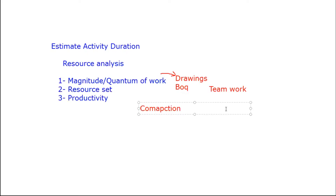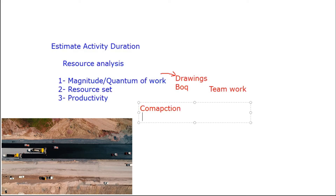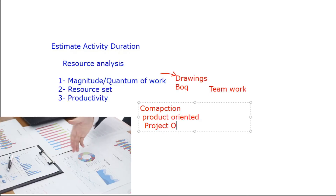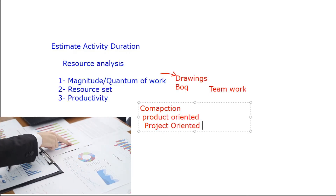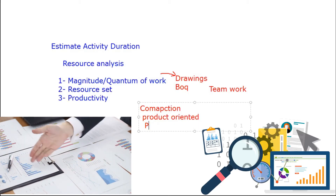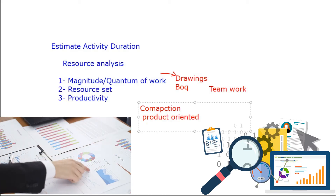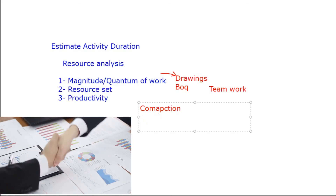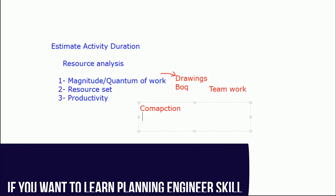You have to know what your activity is. Let's say compaction - natural ground compaction. You need two types of knowledge: product-oriented and project-oriented. Product-oriented means the technical knowledge about the work itself, like road compaction knowledge. Project-oriented means your project management and planning knowledge. As a planning engineer, you concentrate on project-oriented knowledge, while for product-oriented knowledge you use your execution experience.